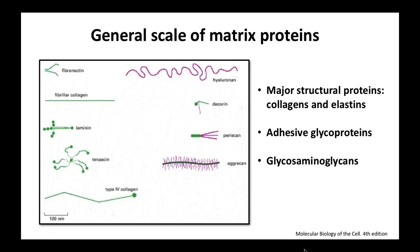I talked about scale earlier. This picture makes the point that different matrix proteins are quite different sizes. This is a representation of fibrillar collagen, and this shows hyaluronic acid — how much larger that is in scale. The general scale reference is 100 nanometers. Now I want to go through the major categories of ECM proteins: the major structural proteins — collagens and elastins — the adhesive glycoproteins including fibronectin and laminin, and then the glycosaminoglycans and proteoglycans.